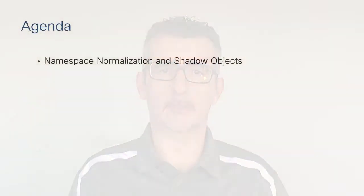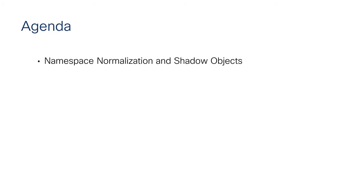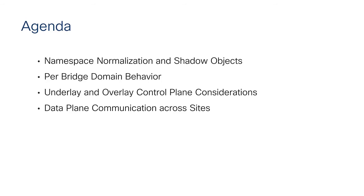In Module 5 of the ACI Multisite training, we are going to look into the implementation detail of the control and data plane for the multisite architecture. We will cover namespace normalization and shadow objects, different per-bridge domain behaviors for layer 2 and layer 3 connectivity, and the implementation for underlay control plane, overlay control plane, and overlay data plane communication.